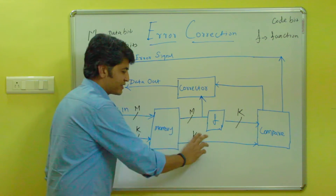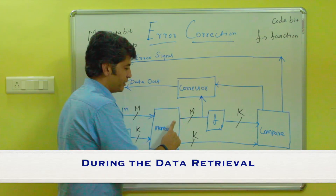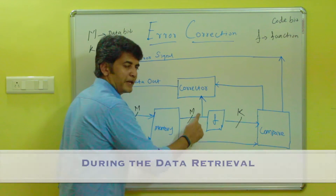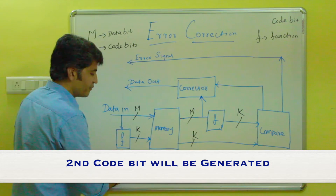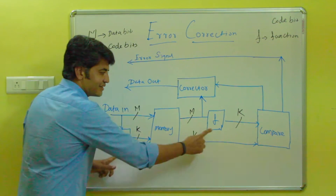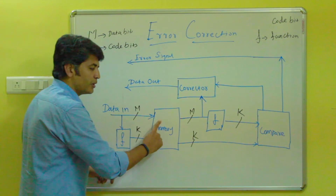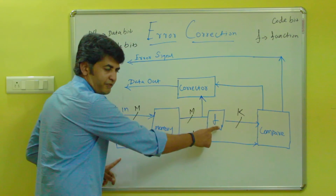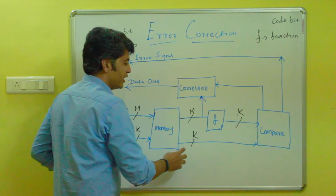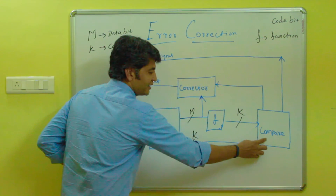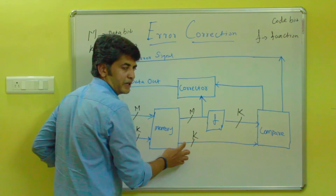While retrieving the data, the data bits and the code bits will each be retrieved separately. At the same time, the retrieved data bit is again applied to the code function, which generates the code bit again. So there is a first code function used during storing and a second code function used during retrieval.